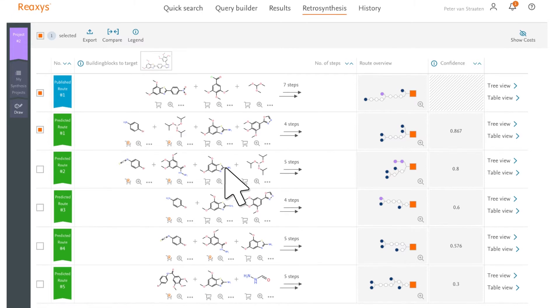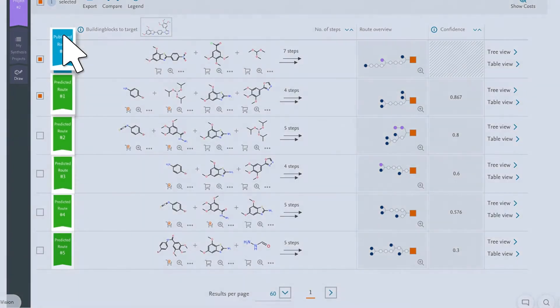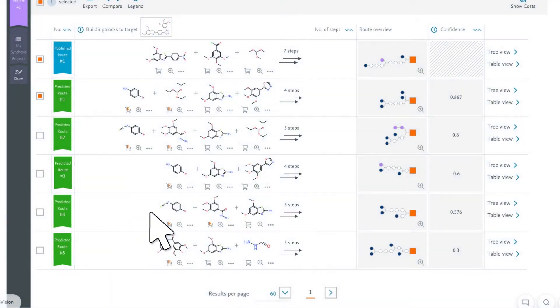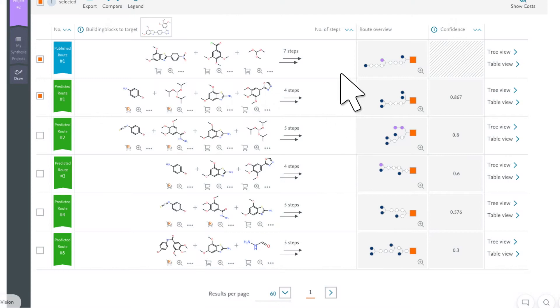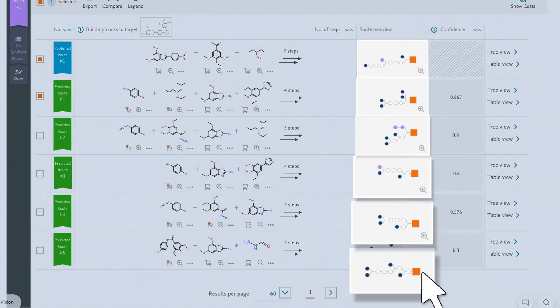The ReAxis Retrosynthesis Engine provides all published and predicted routes for a target molecule in one view. Easily view the starting materials needed for synthesis, compare the number of steps in each route, and assess the route linearity or branching with the interactive graphical route overview.